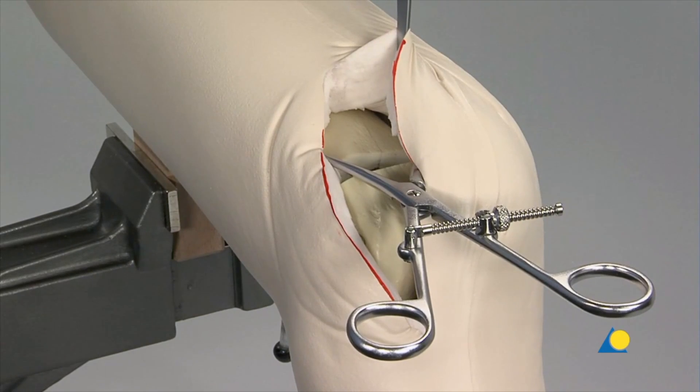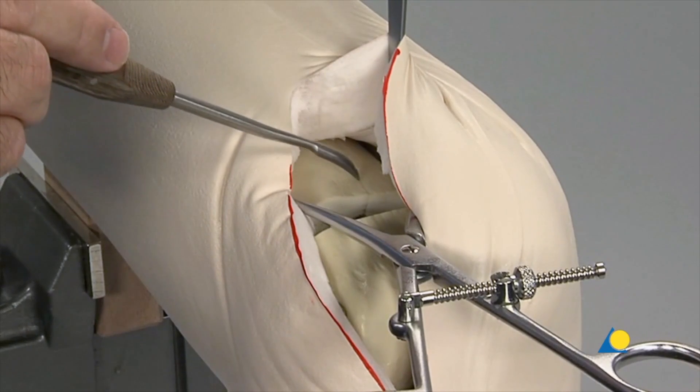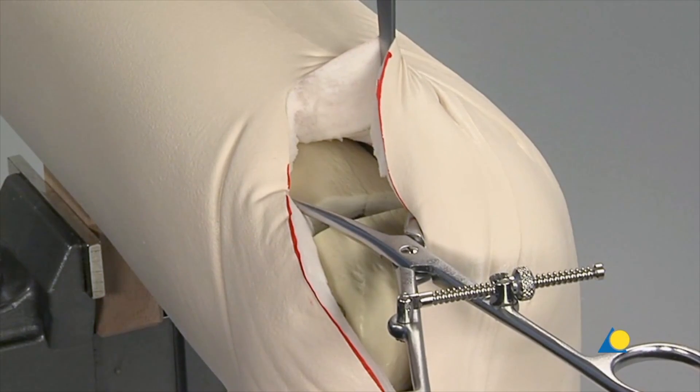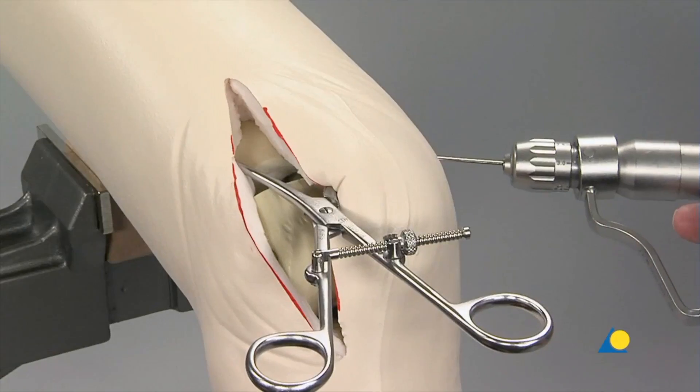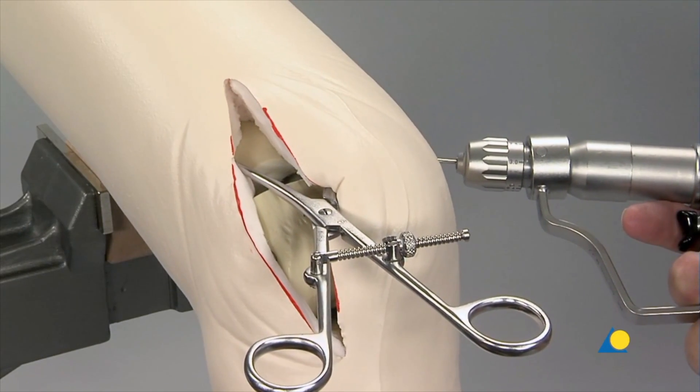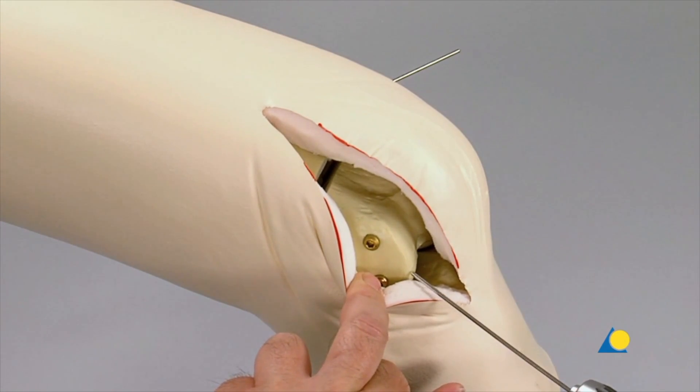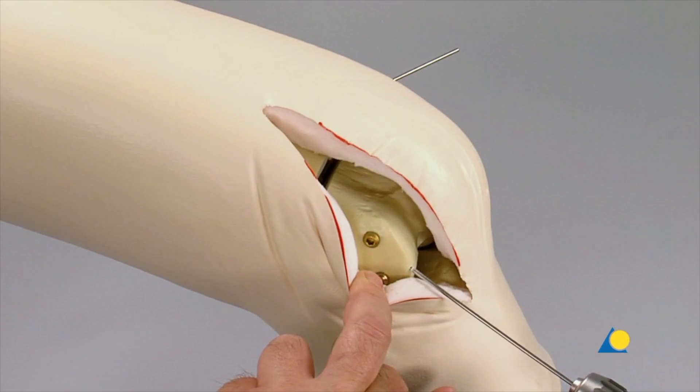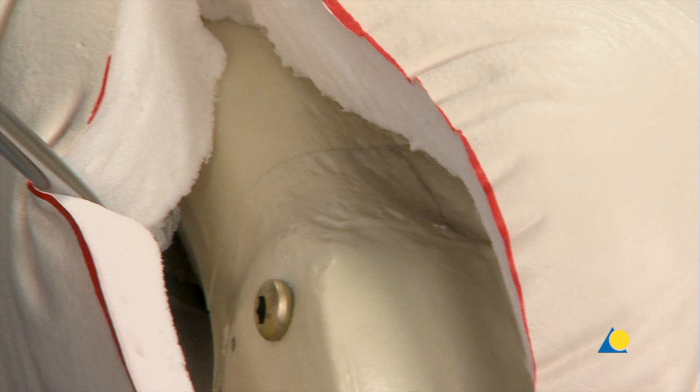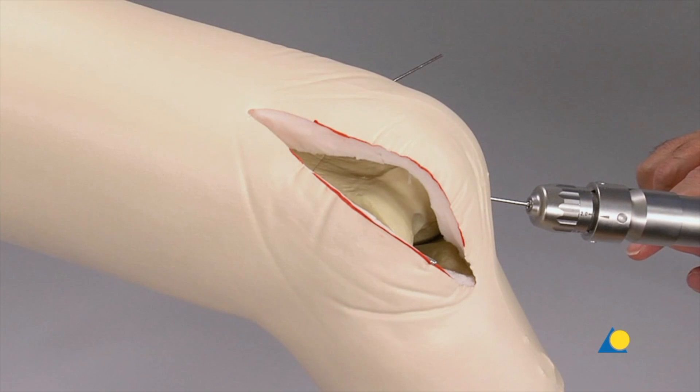The medial fragment is reduced to the shaft using the pointed reduction forceps in order to make a good reduction to the joint block. A K wire is inserted percutaneously to secure the reduction of the medial fragment. The joint block is reduced to the shaft and held in place with a K wire. It is important to have a good reduction before the LCP-DF plate is applied. A second K wire is used to ensure rotational stability.